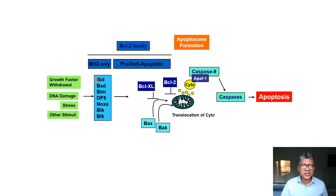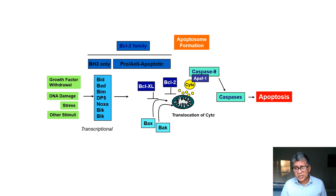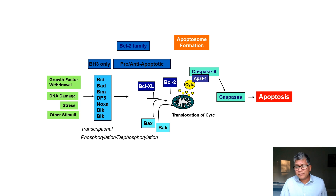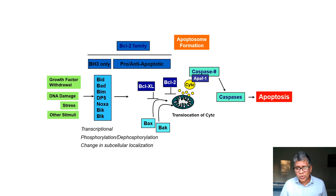How is it determined who wins when cells want to undergo apoptosis? The BH3 family proteins get activated in response to various stimuli. These proteins can be activated either transcriptionally — some BH3 family proteins are not present in a cell and need to be transcriptionally induced, because death is an active process. In many cells, these genes must be synthesized for the death pathway to proceed. BH3 proteins can also be activated by phosphorylation or dephosphorylation, or by changes in subcellular localization — some interact with the cytoskeleton and a change in localization can release them to induce apoptosis.